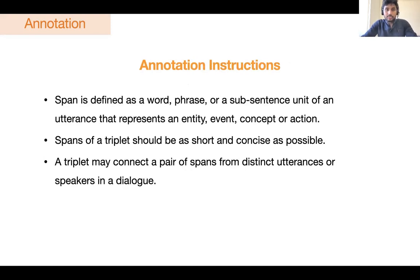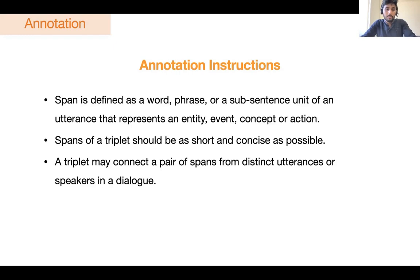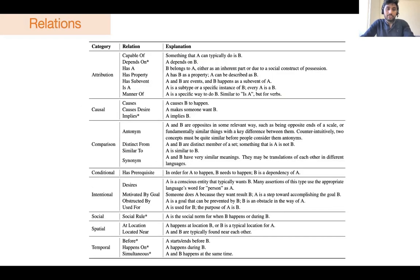To annotate the dialogues, annotators were given several instructions. For example, they were asked to extract spans — basically word, phrase, or sub-sentence units of an utterance — that represent an entity, event, concept, or action. The spans of the triplet should be as short and concise as possible, and a triplet may connect pairs of spans from different utterances or speakers of the dialogue. The annotators also marked the relation between the extracted spans. The set of relations were kept as general as possible to cover a wide range of common sense aspects. Most of the relations were collected from ConceptNet, but we also introduced a few newer ones necessary to annotate the spans of several dialogues.